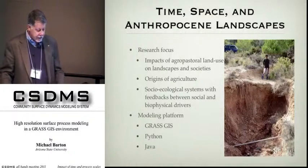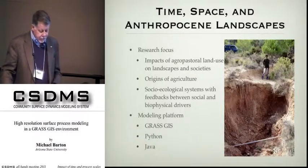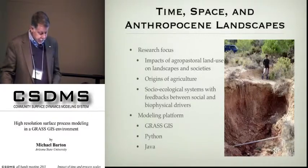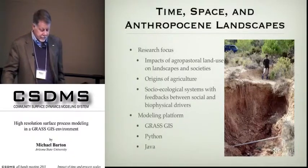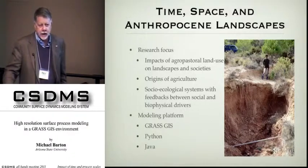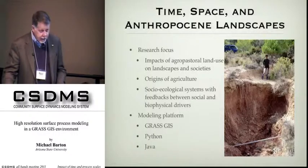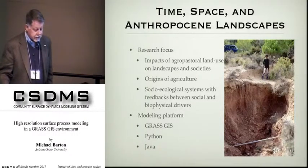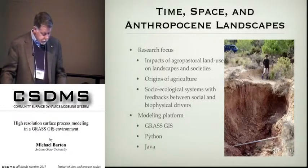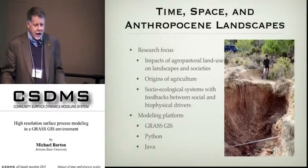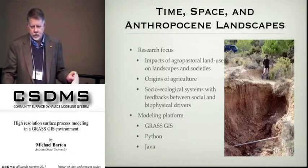Our research focus is on the impacts of agro-pastoral land use on landscapes and societies, and the landscape transformations that accompany the origins of farming and herding. Importantly, human-caused landscape dynamics also have important feedbacks back into human social decisions and subsequent land use decisions. There's this feedback between landscape evolution, social practices, and back into landscape evolution. These have formed complex coupled socio-ecological systems that have become pervasive and global in today's world, with humans being a keystone species. Today I'm going to touch on approaches we've had in modeling these complex socio-ecological systems and human-environmental interactions, focusing on surface process models.